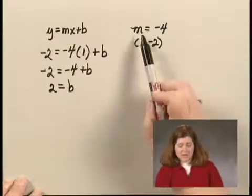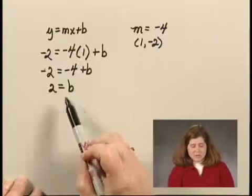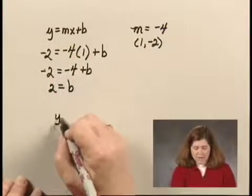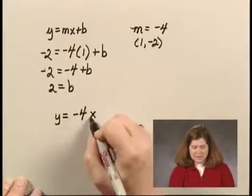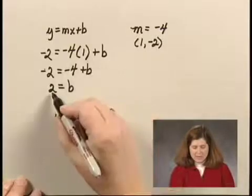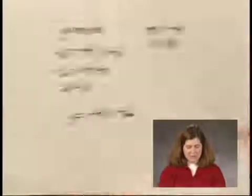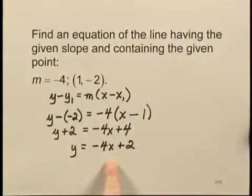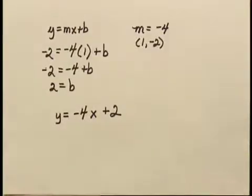Now I've found the slope and the y-intercept. So I can substitute back in this form, y equals negative 4x plus 2. And if we look back, that is the form that we got using the other method. So in either case, we found that the equation of the line is y equals negative 4x plus 2.